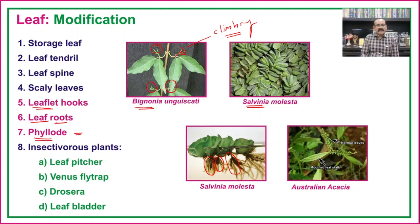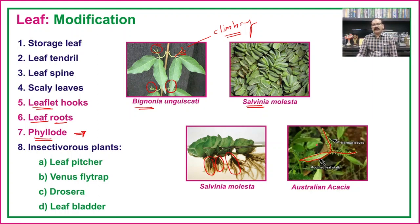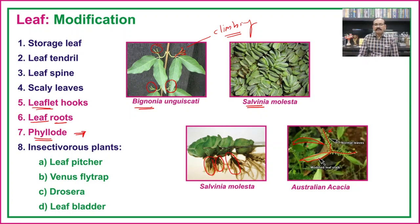Phyllode is the modification of the petiole into a leaf-like structure. In Australian Acacia, this is actually the part of the petiole that develops leaf-like. This can be seen only during the earlier stage of the plant body. When the plant develops, it produces only phyllodes and the normal leaves are completely absent.